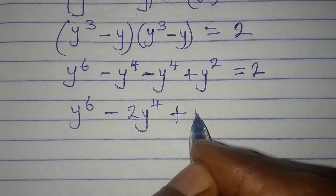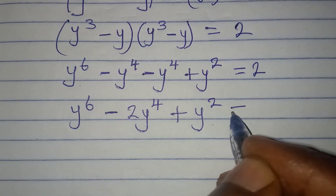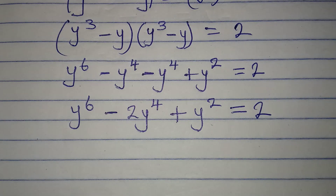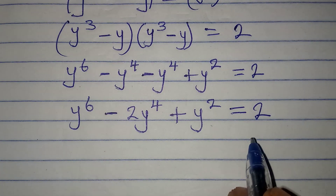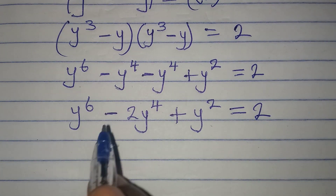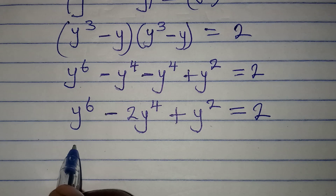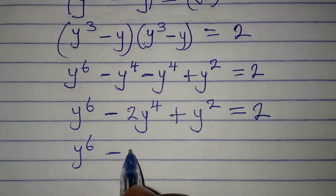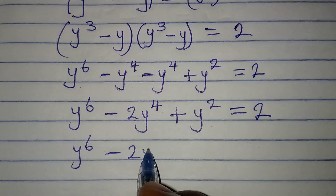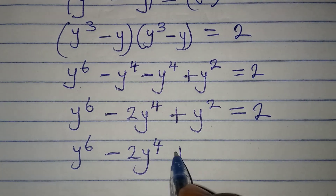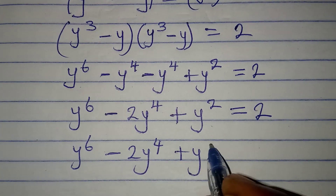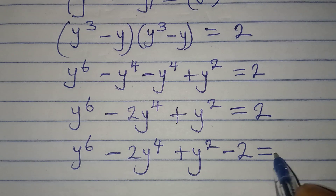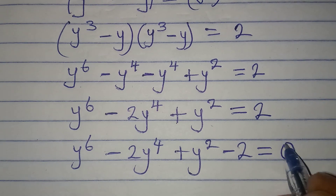Then plus y squared equals 2. Now I want to bring everything to the left, so I have y to the power of 6 minus 2y to the power of 4 plus y squared minus 2 equals 0.